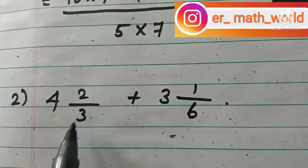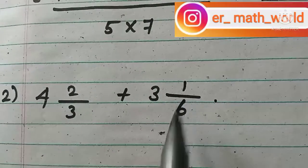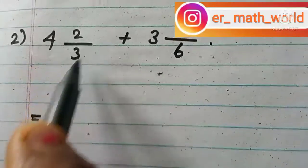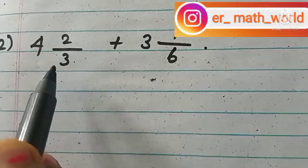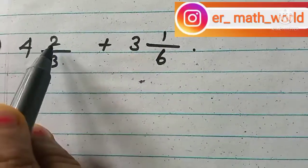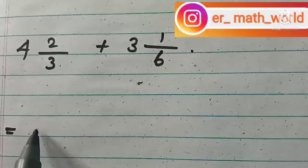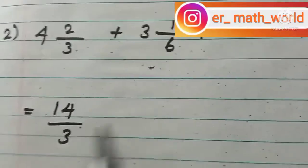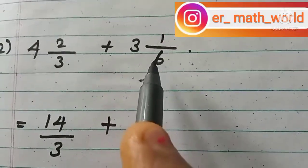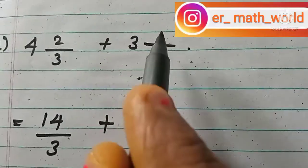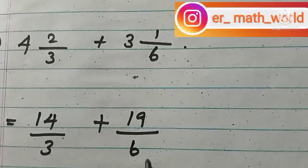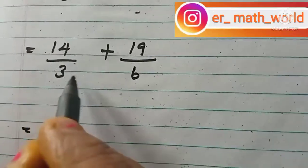The second example is 4 and 2/3 plus 3 and 1/6. The same way, we change the mixed fractions into improper fractions. 4 times 3 is 12, and 12 plus 2 gives 14, so we get 14 divided by 3. Then 3 times 6 is 18, and 18 plus 1 gives 19, so we get 19 divided by 6.